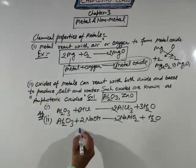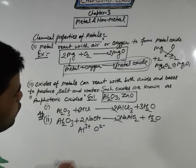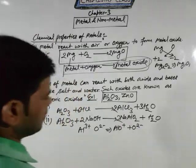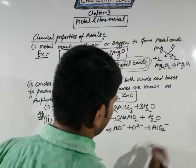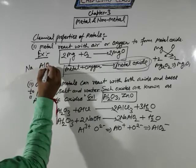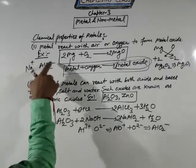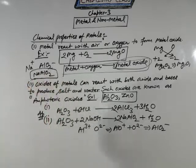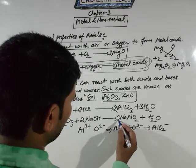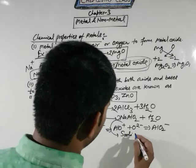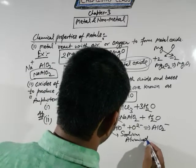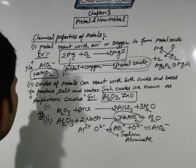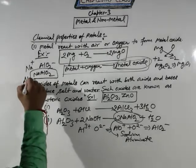The main point is how to get this type of product. Aluminium has a +3 charge and oxygen has a -2 charge. Combining these gives AlO⁺. Adding one more oxygen gives AlO₂⁻. Sodium has a + charge and AlO₂ has a - charge, so 1+ and 1- combine to give the final product NaAlO₂, which is sodium aluminate. This is the final product of this reaction, and it is a very important oxide. The board will always ask a question regarding amphoteric oxide.